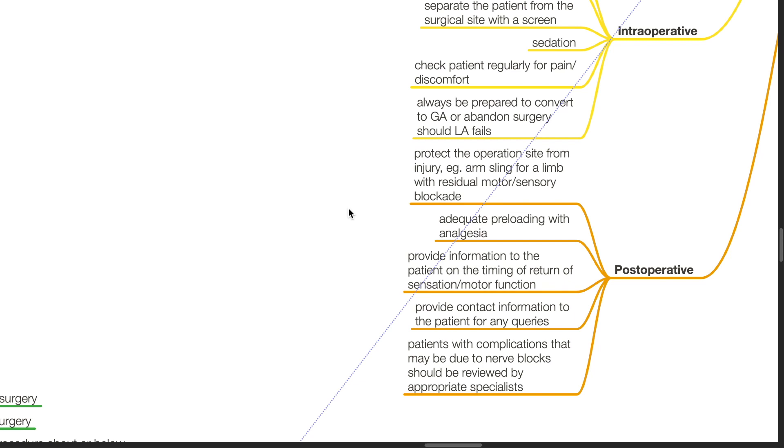Postoperative care includes protection of the operative site from injury, such as using an arm sling for a limb with residual motor or sensory blockade. Adequate preloading with analgesia. Provide information to the patient on the timing of return of sensation and motor function. Provide contact information to the patient for any queries. Patients with complications that may be due to nerve blocks should be reviewed by appropriate specialists.